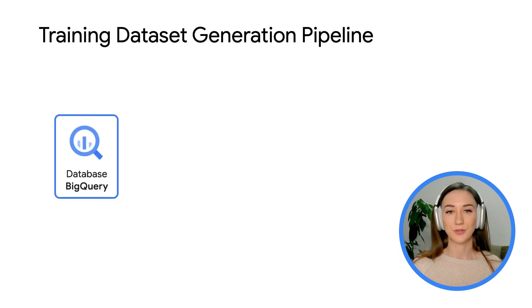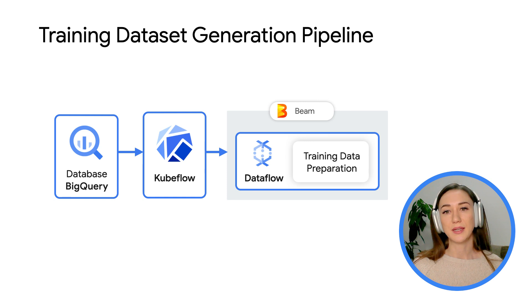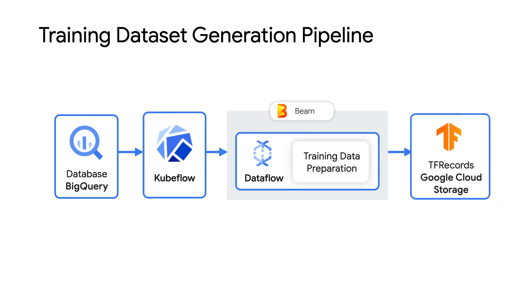Can you start with the training dataset generation pipeline? Training dataset generation demands the most resources. It uses Kubeflow as an orchestrator, pulls data from BigQuery — usually a few years of airline historical data — and then runs on Dataflow using the Beam programming model. As output, it generates TF records that we put in Google Cloud Storage and register in our model metadata store. This pipeline is very demanding, which is why we run it on Google TPU. Even though TPU is very fast, it still takes hours to generate such a training dataset.